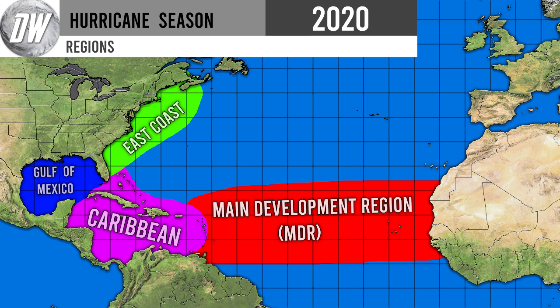We're going to be going over different regions, so here is a map I made to make it clearer. Our blue area is the Gulf of Mexico, our east coast region is in green, our Caribbean region is in pink, and our main development region — also called the MDR — is in red. This is where tropical waves come off of Africa and cross the Atlantic from east to west toward the Caribbean. It's probably the most important region in a hurricane season.